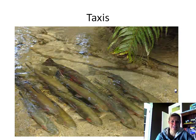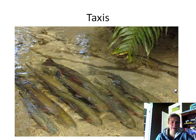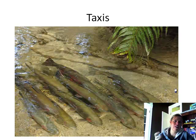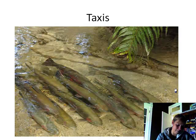Taxis involves oriented movement with a specific direction in mind. This picture shows trout all facing upstream — they do this so they can see prey coming, avoid being swept away by the current, and spot predators. Taxis is movement directly toward or away from something. For example, if you hear gunshots while hiking, moving away from them is taxis. If you're cooking something that smells good and everyone comes into the kitchen, that's also taxis — they're moving toward the smell.